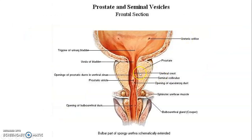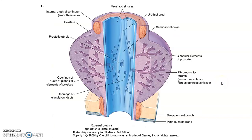This is the prostate gland and the prostatic urethra. Remember, the prostate gland opens through the prostatic utricle and you also have the openings of the ejaculatory ducts. This is the uvula of the bladder, the urethral crest, and openings of prostatic ducts in the urethral sinus. This is what we call the seminal colliculus, which has the prostatic utricle and the openings of the ejaculatory duct. These are also openings from the prostate glands and this is the urethral crest.